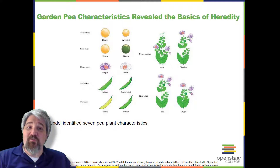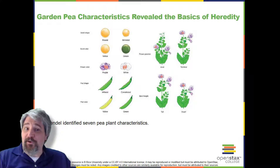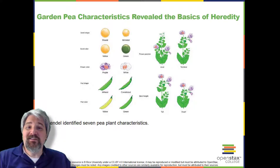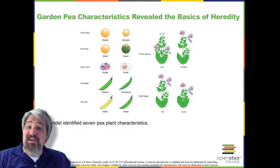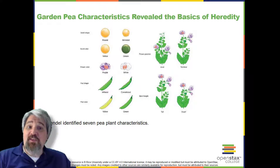To fully examine each characteristic, Mendel generated large numbers of F1 and F2 plants and reported the results from thousands of F2 plants. What result did Mendel find in his crosses for flower color? First, Mendel confirmed that he was using plants that bred true for white or violet flower color. Irrespective of the number of generations examined, all self-crossed offspring of parents with white flowers had white flowers, and all self-crossed offspring of parents with violet flowers had violet flowers. Mendel also confirmed that, other than flower color, pea plants were physically identical — an important check to ensure the two varieties differed only with respect to one trait.